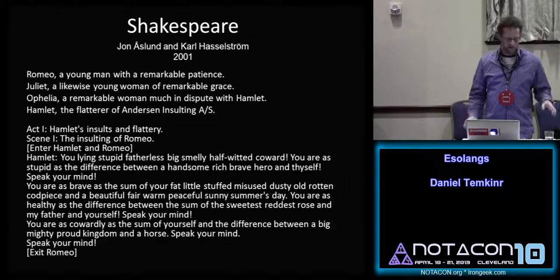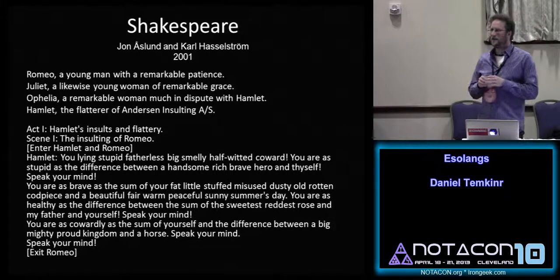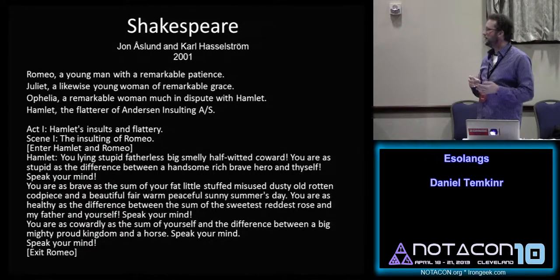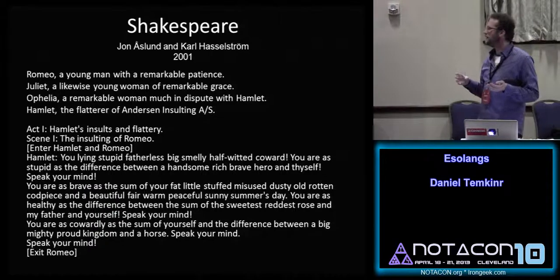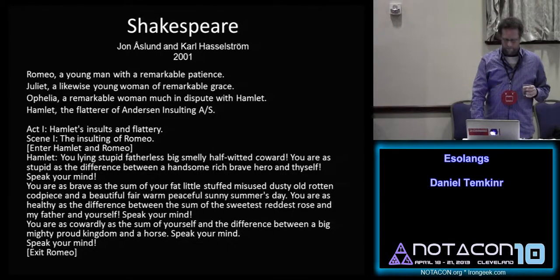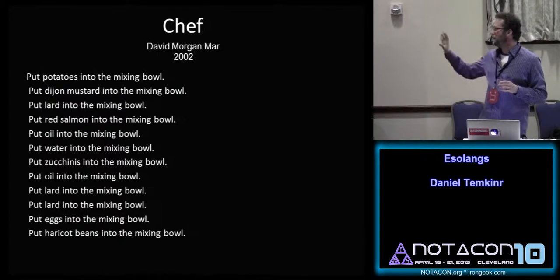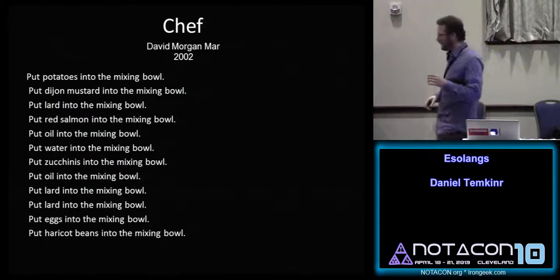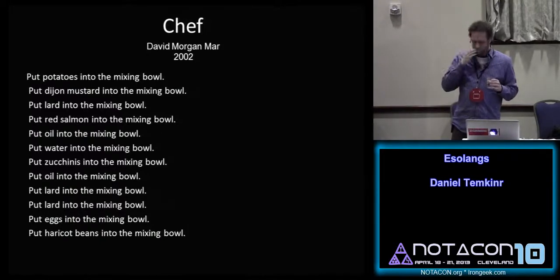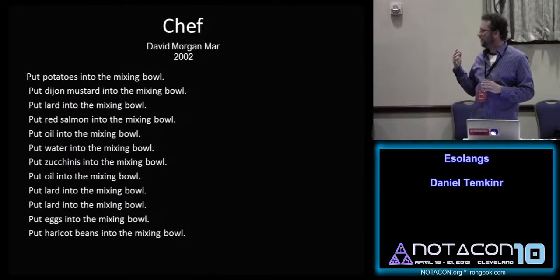There are other languages similar to Piet where you produce something that doesn't look like code at all but is shaped by the program you're trying to write. Shakespeare: you write a Shakespeare play where characters must have names from real plays — like Romeo and Hamlet — and the way they interact, how much they insult or compliment each other, controls how data is copied. Chef is a language where this is only part of the Hello World program — you can see it spells Hello World reading from the bottom — but it leads to some very atrocious recipes. I've never seen an edible Chef program.